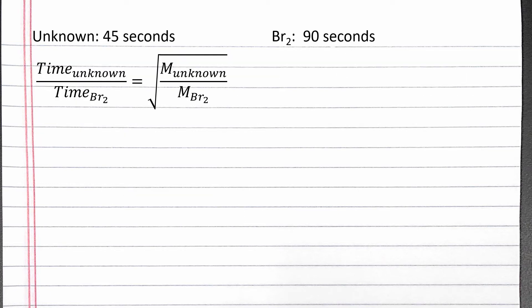Next, we can plug in our numbers from the equation and solve. The time for the unknown and molar mass of the unknown are on top in our equation, and the time and molar mass for bromine gas are on the bottom.